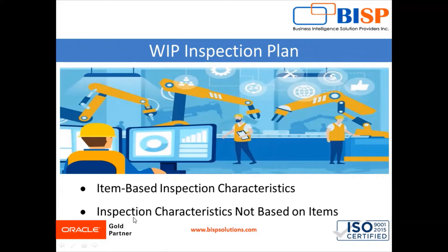The next type is inspection characteristics not based on an item. You can define inspection characteristics that are not mapped to item attribute values. This type of inspection characteristic can be a number, character, or date. You must specify a target value for all types, and where applicable, a range or list of valid values, or a unit of measure.